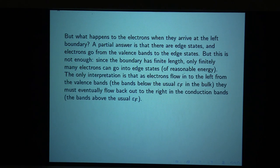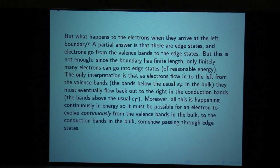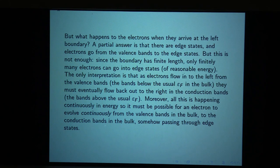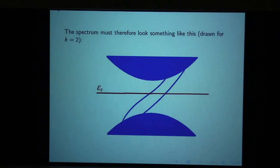As electrons flow in to the left from valence bands — bands below the usual bulk Fermi energy — they must eventually flow back out to the right in conduction bands, bands above the usual Fermi energy. Moreover, all this is happening adiabatically, meaning individual states are evolving continuously in energy. So it must be possible for an electron to evolve continuously from valence bands in the bulk to conduction bands in the bulk, somehow passing through edge states. So the spectrum has to look something like this, which I've drawn for k equals 2.